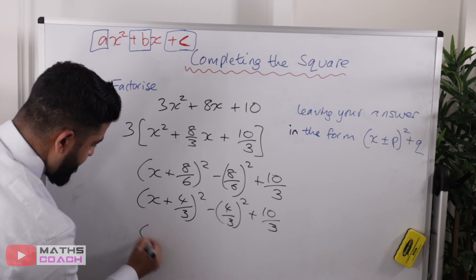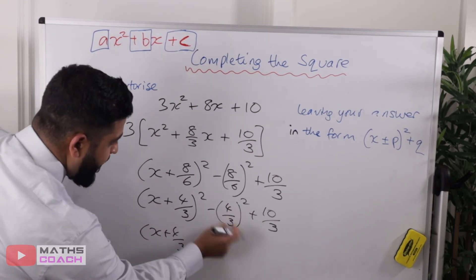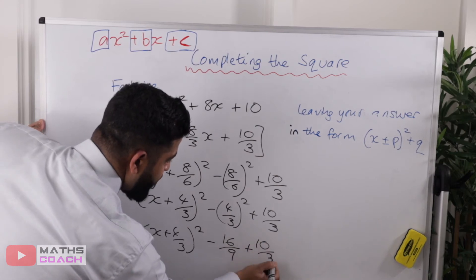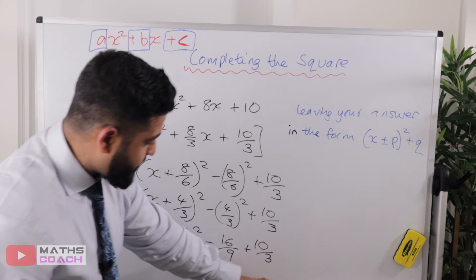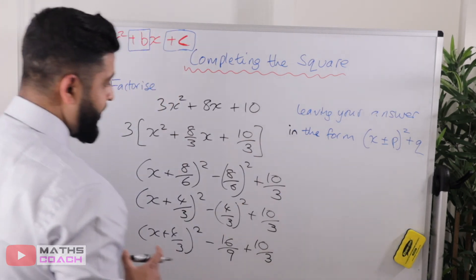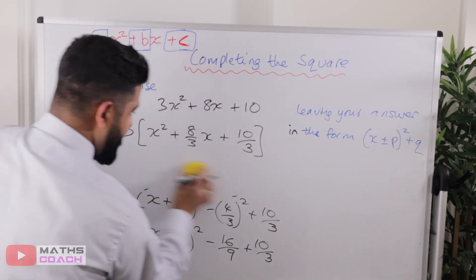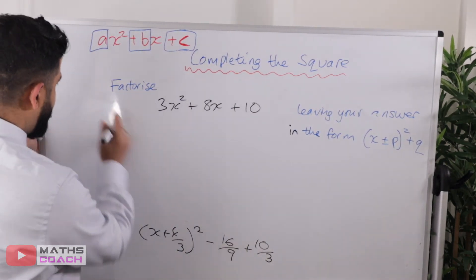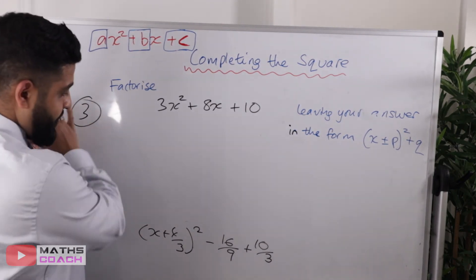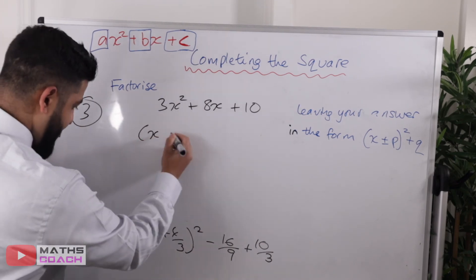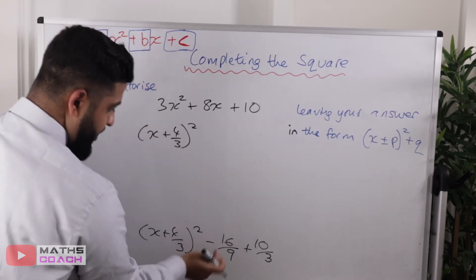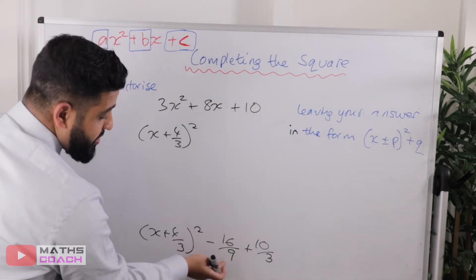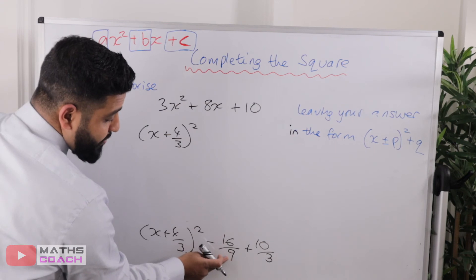Working out the constant: we have minus 16 over 9 plus 10 over 3. I'm going to continue working higher up on the board — don't forget there's still that 3 to multiply with outside, so I'll write that as a reminder. We have x plus 4 over 3 squared, and then minus 16 over 9. Now I need to make the denominators match. I can't divide 16 by 3, so I need to increase the denominator of 10 over 3.